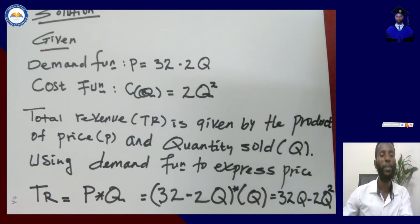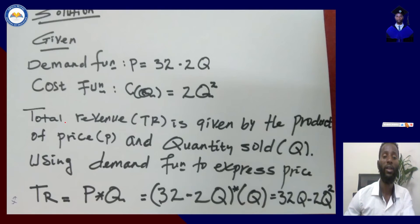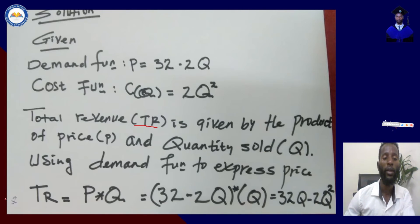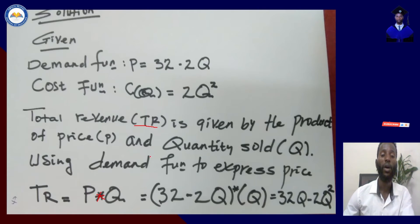The given parameters are: the demand function p equals 32 minus 2q, and the cost function c(q) equals 2q squared. Total revenue (TR) is given by the product of price and quantity, which is p times q. Using the demand function to express price, the total revenue is calculated as p times q, where p is the price of the product and q is the quantity sold.